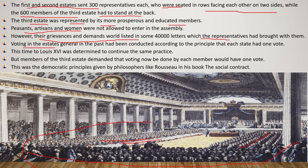Voting in the Estates General in the past had been conducted according to the principle that each estate had one vote — so three estates and three votes. This time Louis XVI was determined to continue with the same practice. But the members of the third estate demanded that voting now be done individually, so that each member would have one vote.